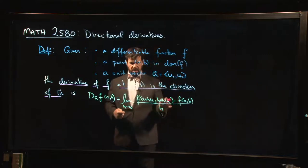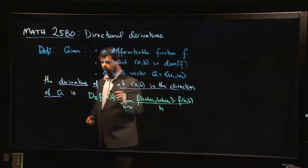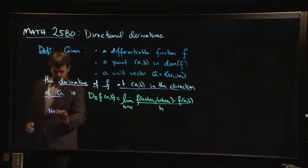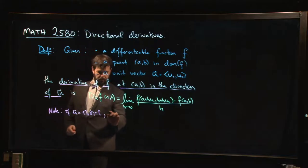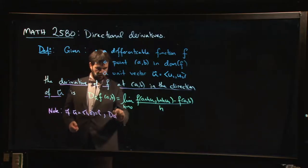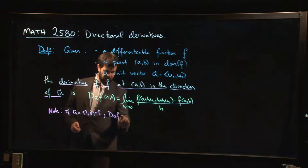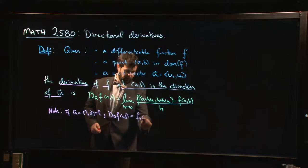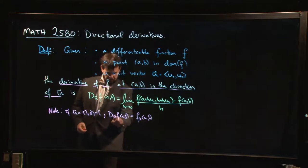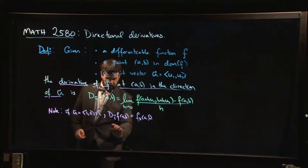This is highly dependent on the path that you choose. It depends on these parameters u1 and u2, depends on the direction. In particular, we can note that if you take u to be (1, 0), so the unit vector i, then you get that the derivative of f at (a, b) in the direction of u is just the partial derivative with respect to x at (a, b).